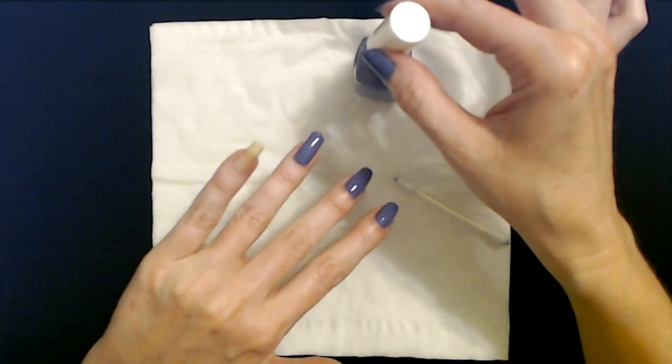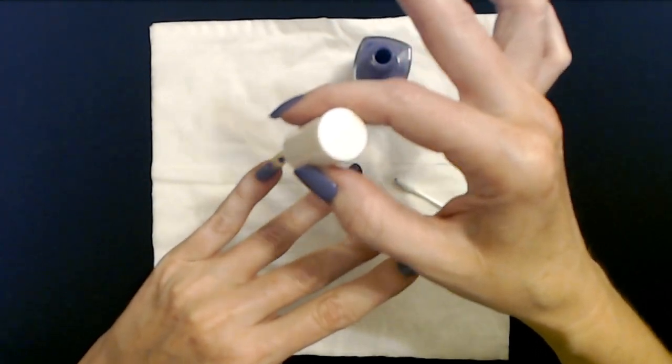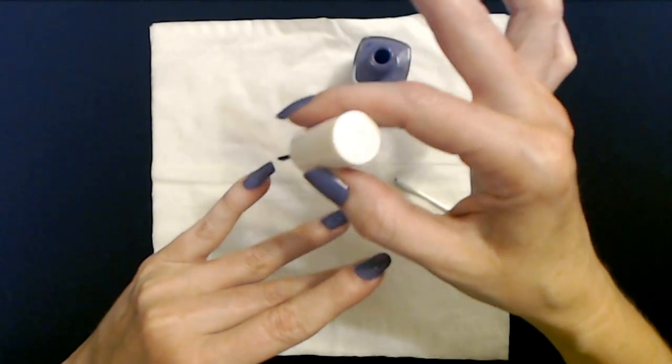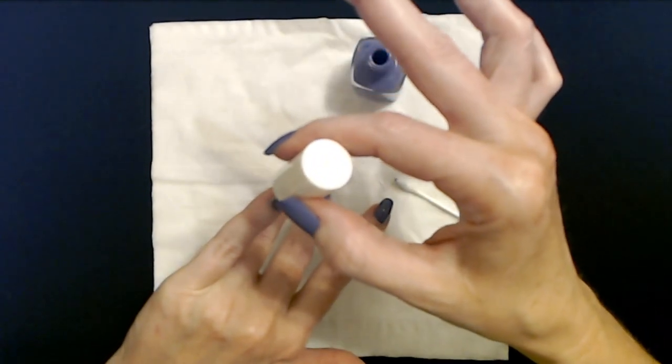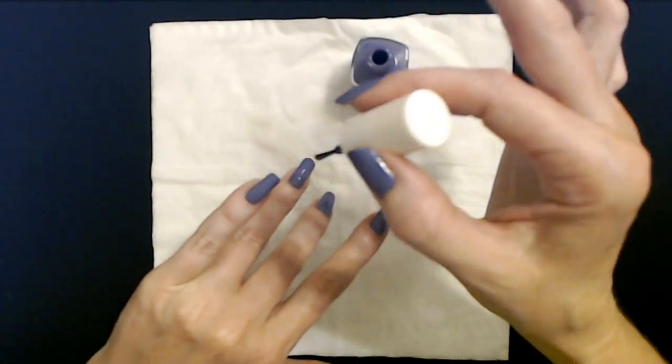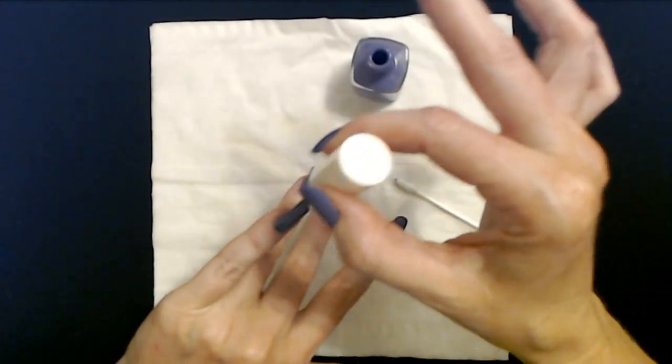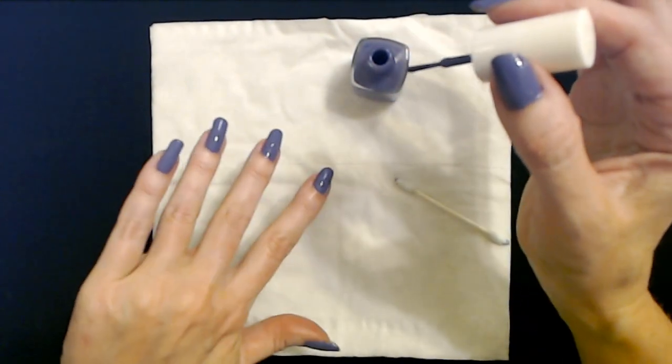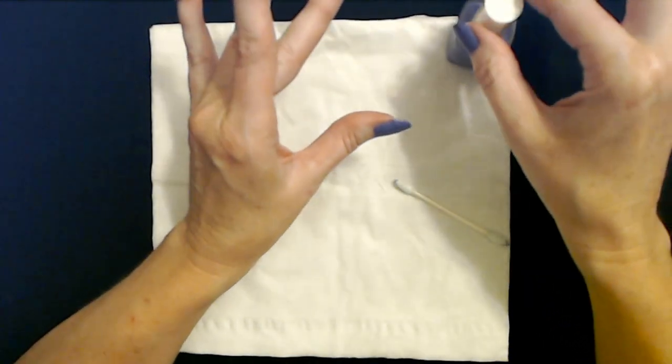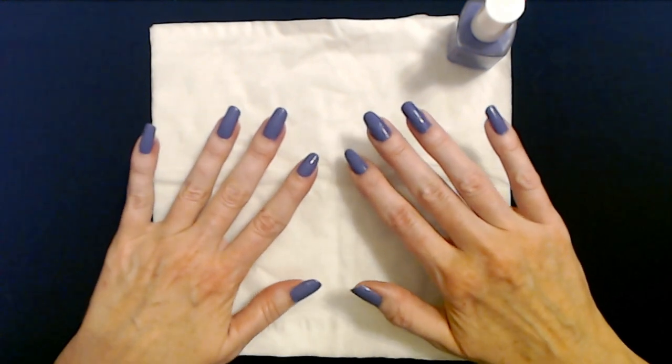Now we're going to do the last one. Little pinky. Start down here. Just bring it up. And then we just smooth it out. Like that. Make sure you always close up your nail polish. Don't leave it open. Now we have a nice little set of painted nails.